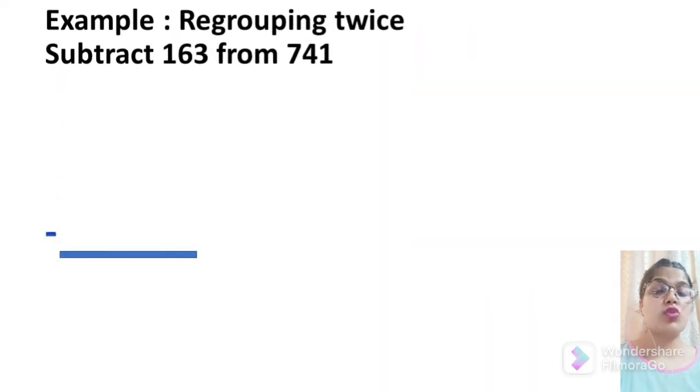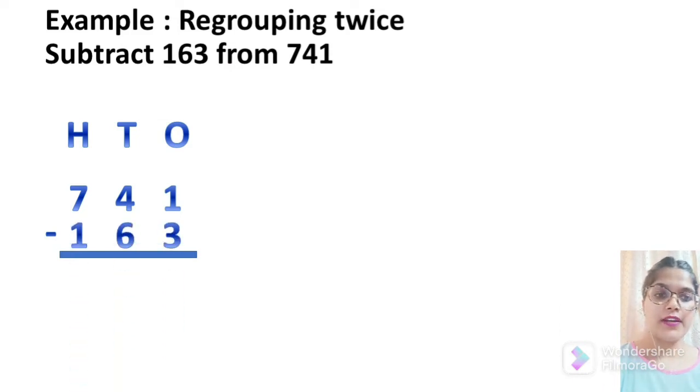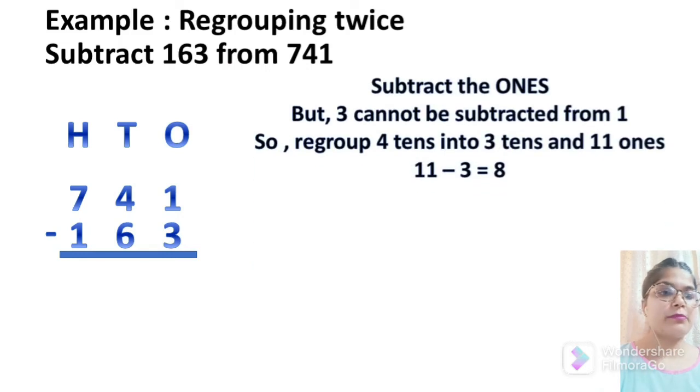Now, we will regroup twice and for that we have two numbers 163 from 741. We have heading of ones, tens and hundreds and we have to write 741 first as it is greater than 163. Now, we will write 163 below that as subtract and then we will find out the difference. As you can see 1 is smaller than 3 that means 3 cannot be subtracted from 1. So we will regroup 4 tens into 3 tens and 11 ones. For that again, we have to put cross on the ones digit which is 1 here and write 11 above that and we will put cross on 4 as it is left with 3 only. 11 minus 3 is 8.